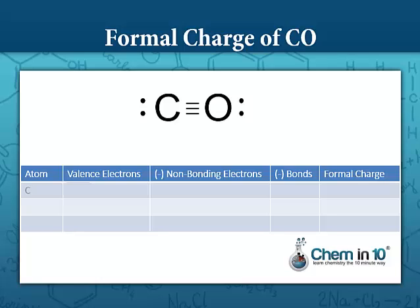To determine the formal charge of carbon, we determine the number of valence electrons that carbon started with, which is four. We subtract from it the number of non-bonding electrons, so that's going to be that lone pair, so that's minus two, minus the number of bonds, which is three. So four minus two minus three is negative one.